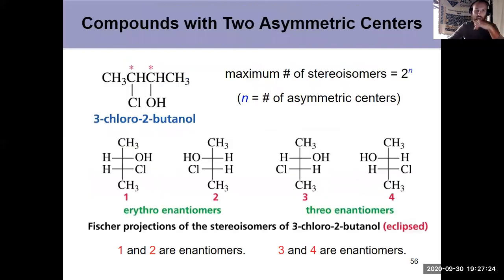But what about multiple asymmetric centers? That's what we're going to finish this video with. We have compounds with two asymmetric centers. And if I have more asymmetric centers, I have more stereoisomers. And the maximum number of stereoisomers that a compound can have is 2 to the n, where n is the number of asymmetric centers. So in the previous video, we were just looking at one asymmetric center. 2 to the 1 is 2. So there were 2 enantiomers.